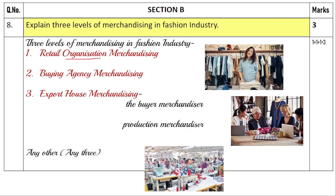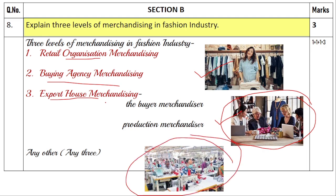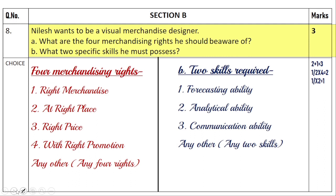So the three levels are: retail organization, which deals with retail outlets; buying agency, which acts as a buyer and looks out for a manufacturer when you place an order; and export houses, which can operate from the side of the buyer or the manufacturer.